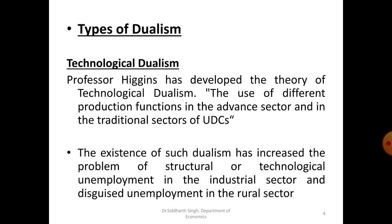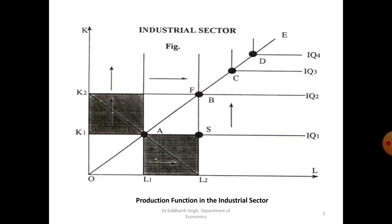This figure shows the production function in the industrial sector. Higgins has assumed two factors and two sectors with their respective factor endowments and production functions. The industrial sector is engaged in plantation, mines, oil fields, and large-scale industry. It is capital intensive and characterized by fixed technical coefficients — meaning factors have to be combined in fixed proportions. The rural sector is engaged in production of foodstuffs, handicrafts, and very small industries, and has changeable technical coefficients of production, allowing different alternative combinations of labor and capital.